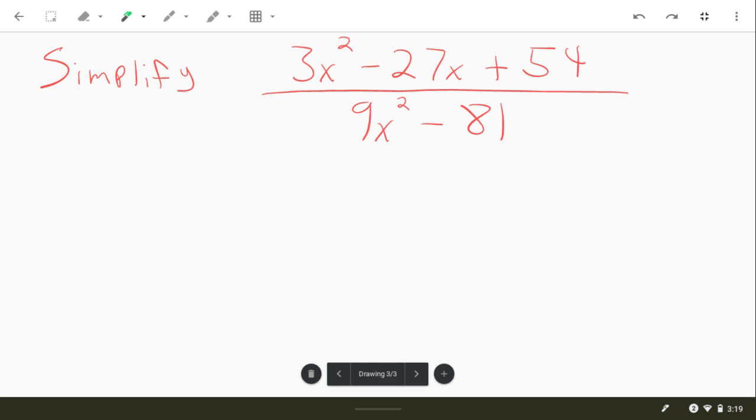What we need to do first is factor the numerator and denominator. We're going to do a couple of steps here. Now, the denominator, you could jump straight into the difference of squares, 3x minus 9, 3x plus 9, but we need to factor out that GCF first. We always want to do that.